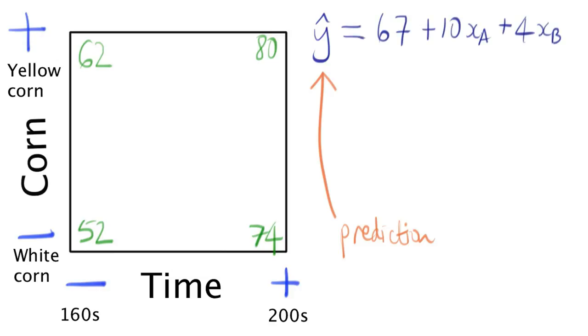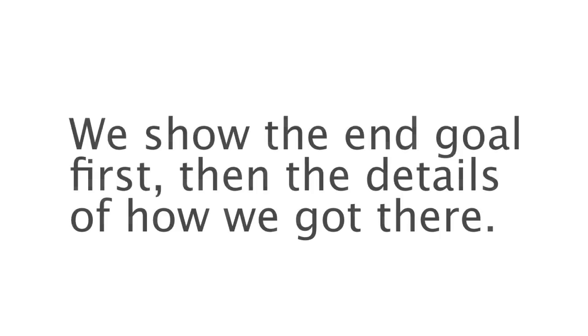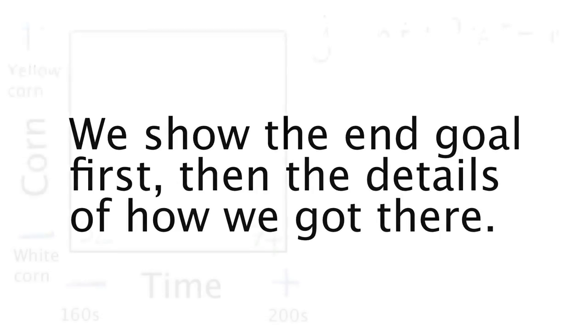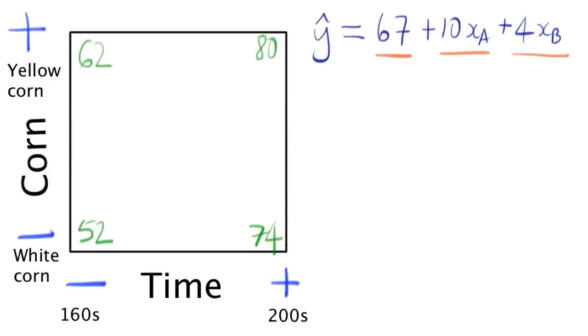The prediction has three parts. The first part is the baseline amount of popcorn we expect. Then we're going to add to that the additional amount due to the cooking time, the A factor, and then there's the additional amount due to the popcorn type, the B factor. I'm going to show you how we make the predictions first, then go into the details of how we got these numbers: 67, 10, and 4.